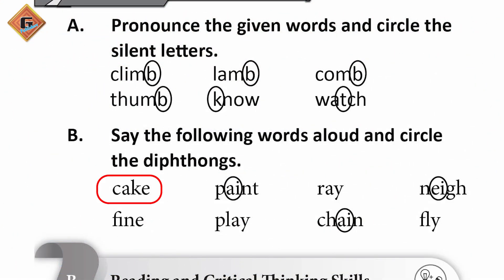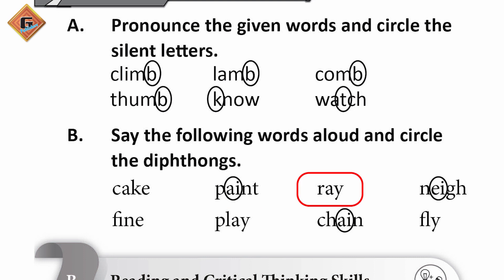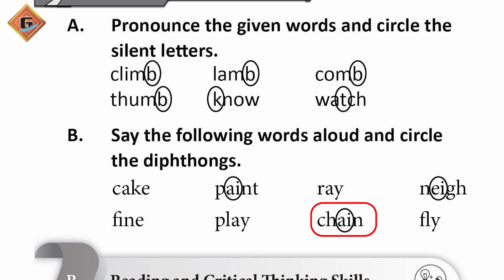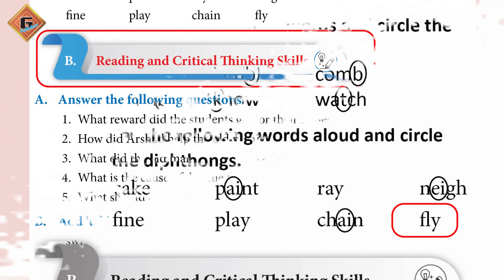Part B: Say the following words aloud and circle the diphthongs. Kick — no diphthongs. Paint — AI. Rave — AY. Name — AI. Find — no diphthongs. Play — AY. Chain — AI. Fly — no diphthongs.